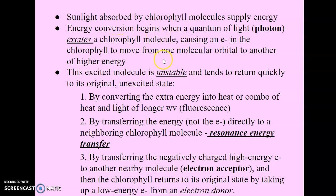The photon causes an electron in the chlorophyll to move from one molecular orbital to another of higher energy — we're exciting this electron so that it moves up to a higher energy level state. This excited molecule is unstable, and because of that it will tend to return very quickly to its original unexcited state. It can do that in three ways. The first way is by converting the extra energy into heat, or converting it into a combination of heat and light of a longer wavelength, which we call fluorescence.